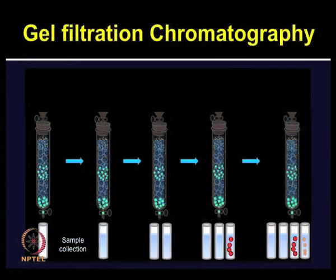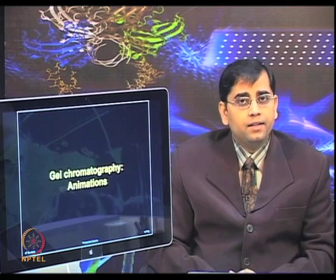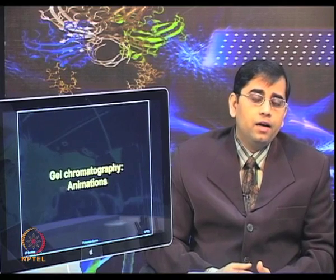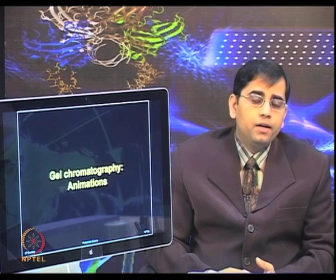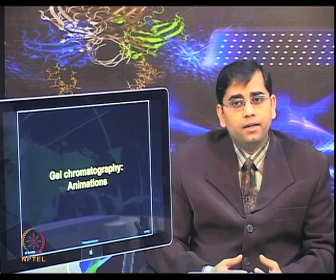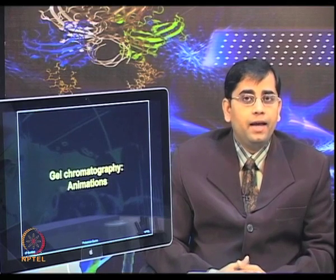After these steps, fractions are collected and analyzed for protein content. Larger proteins elute first, then small molecules elute later. Gel filtration chromatography is useful for removal of contaminants, desalting steps, and buffer exchange. However, its drawbacks are its low capacity, broad distribution of pore size, and small sample volumes that can be analyzed.